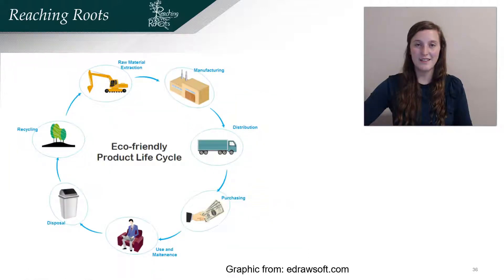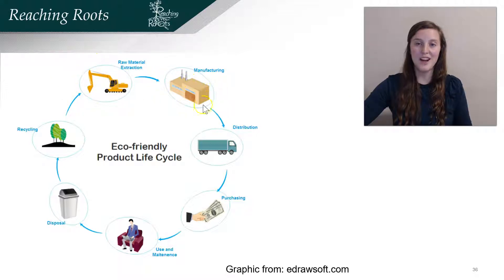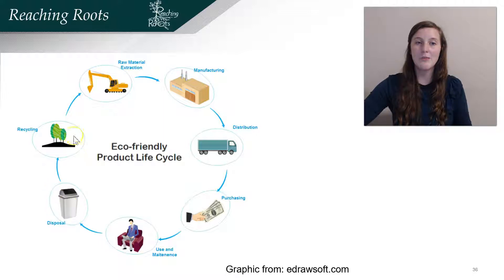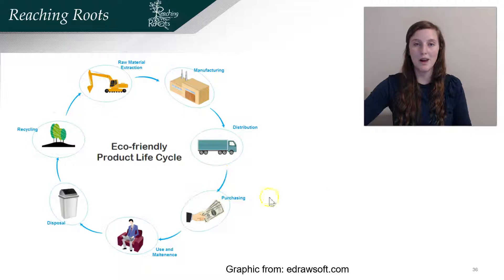Cyclical processes can also be used by industry. For example, you can extract raw materials, manufacture them to produce a product, then distribute them. People will buy them, and after they have used them, dispose of them, and then they are recycled. Some of those parts can be reused to make more products.